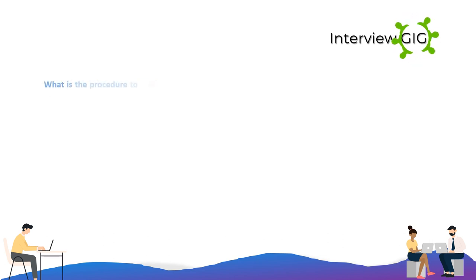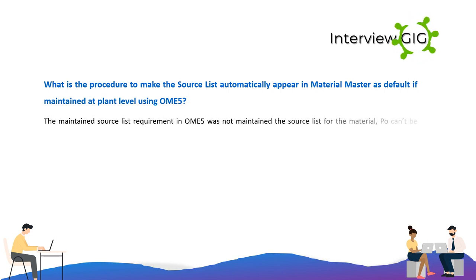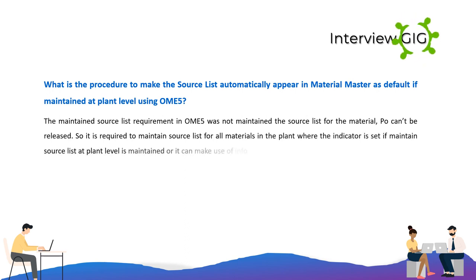What is the procedure to make the source list automatically appear in material master as default if maintained at plant level using OM5? If the source list requirement in OM5 is not maintained, the source list for the material PO cannot be released. It is required to maintain source list for all materials in the plant where the indicator is set, or you can make use of the info record to do so automatically.